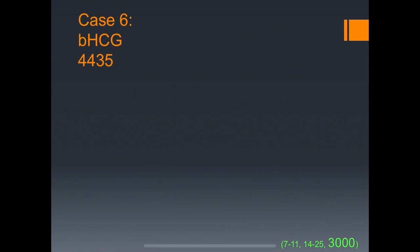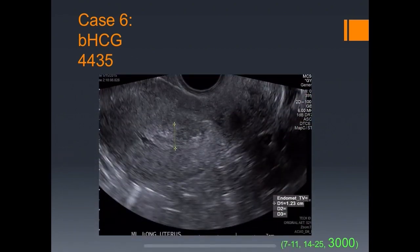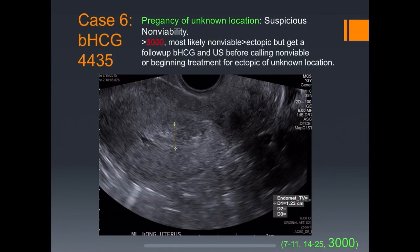Case six: a beta of 4,435. This takes us to our last number — 3,000 is the cutoff. We didn't see an intrauterine gestation. When the beta is above 3,000, we should see a pregnancy intrauterine. Since we don't, it's one of two possibilities: more likely a non-viable aborted pregnancy, but it could also be an ectopic of unknown location. We follow the betas — if they go down, it's a non-viable aborted pregnancy; if they go up, we're dealing with an ectopic of unknown location and OB-GYN can start treatment.